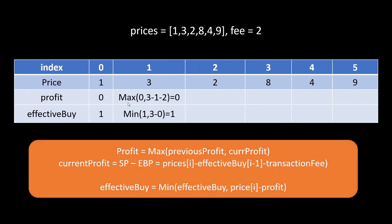Moving ahead, the profit becomes the maximum of either the previous profit or the profit from selling the stock at the current price. To find the current profit, the sell price minus the effective buy price minus the transaction fee of 2 gives a maximum of zero. The effective buy price then becomes the minimum of either the previous effective buy price or the current price minus the profit seen so far. The minimum of both is 1.